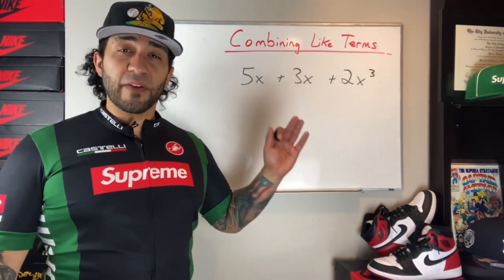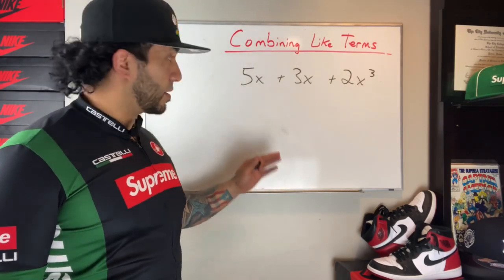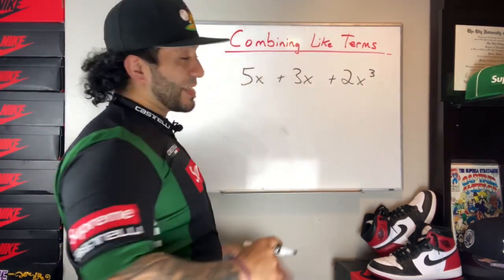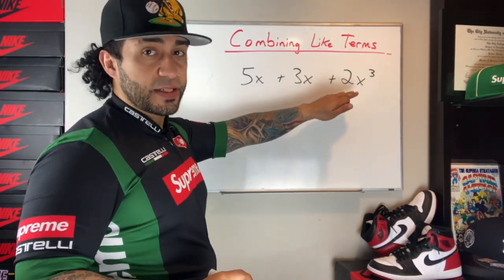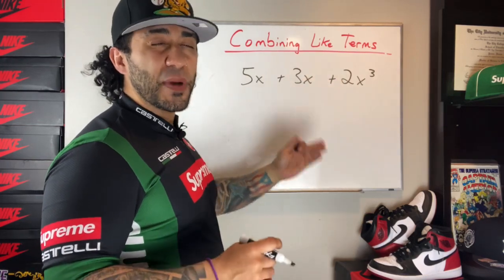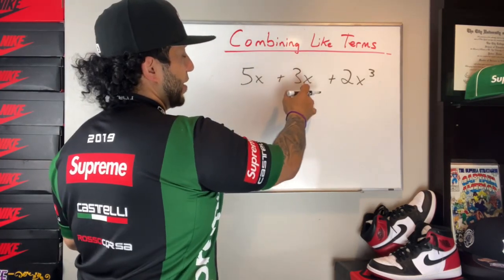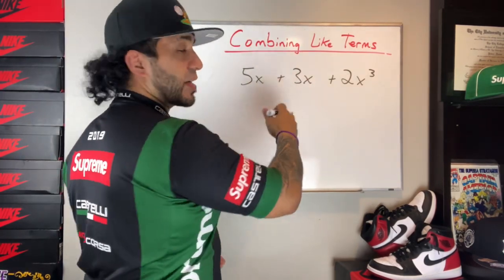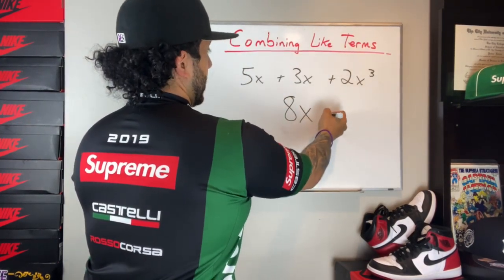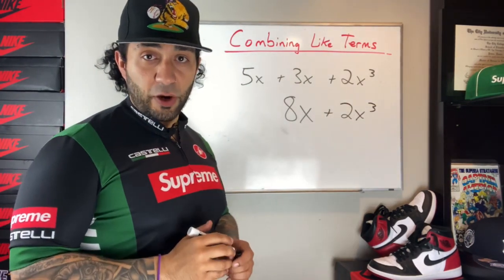Now in this example, we have three terms that seem like they might all be able to be combined. Here we have x again — we have 5x plus 3x. However, this last term isn't 2x, it's 2x cubed, 2x to the third power. Because of that, it's not considered a like term to 5x and 3x. So 5x plus 3x is once again going to give us 8x, and we're going to bring down the term of 2x to the third power. And that's it — we've simplified it as far as we can.